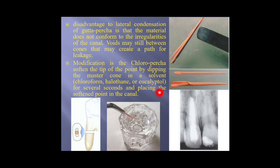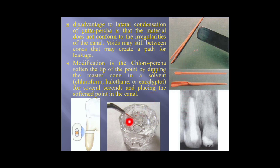A technique called chloroparka involves manipulation of a gutta-percha cone in a special solvent such as chloroform, halothane, or eucalyptol oil. In cases of large canals where normal sizes of gutta-percha cannot fit, several cones are immersed in the solvent and rolled together to form a large cone to fit inside the large canal. This technique is called chloroparka.